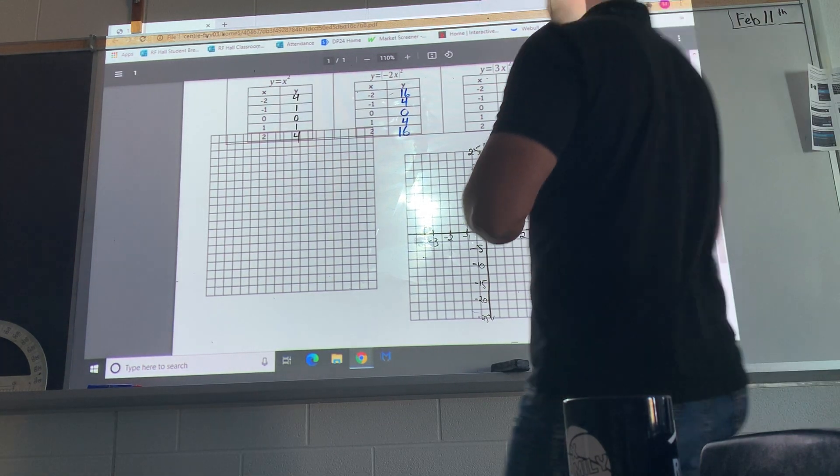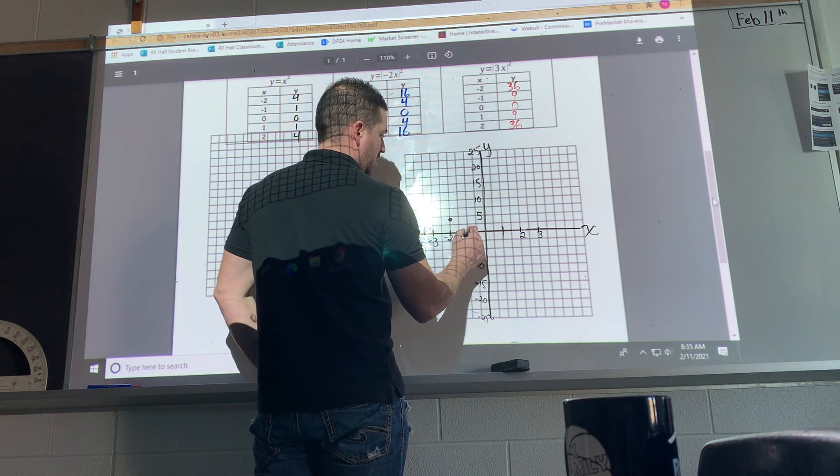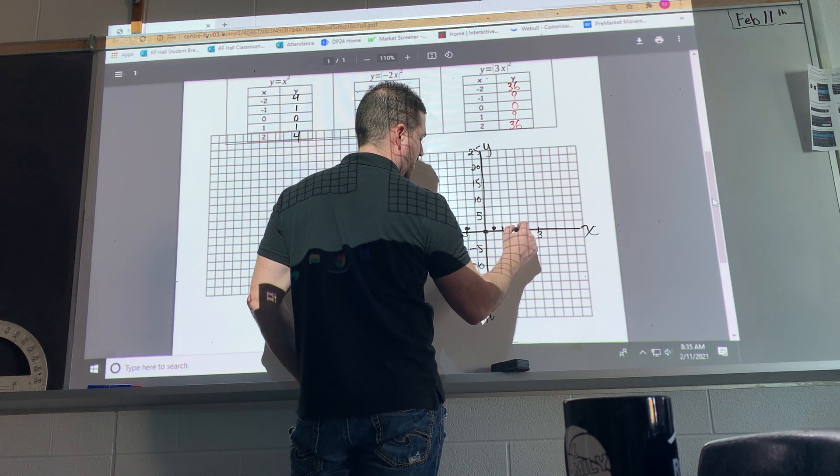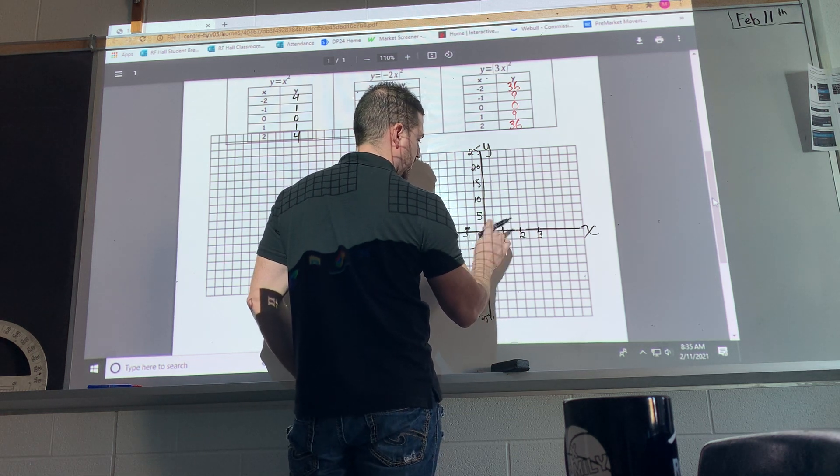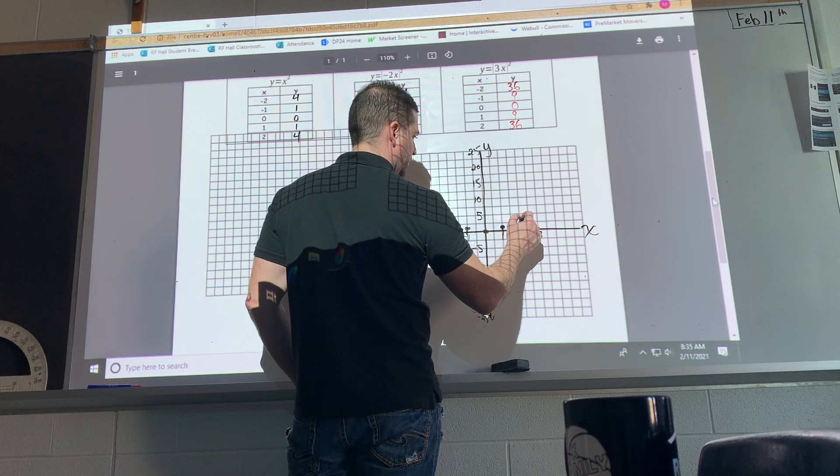All right, so now I'm just going to graph in three different colors. So negative 2 and 4, negative 1, 1, 0, 1, and 1, and 2 and 4.